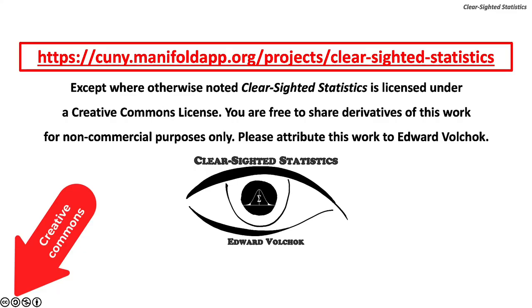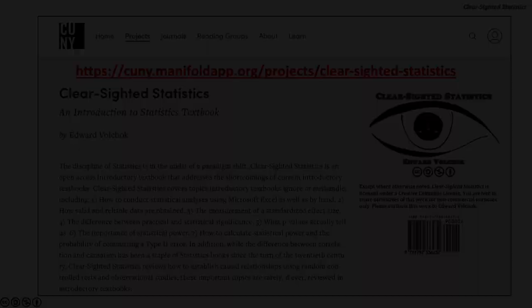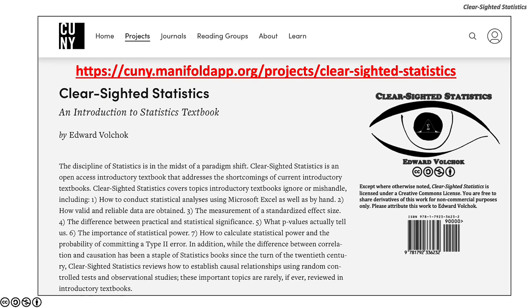Except where otherwise noted, Clearsighted Statistics is licensed under a Creative Commons license. You are free to share derivatives of this work for non-commercial purposes only. Please attribute this work to Edward Volchak. You can access Clearsighted Statistics for free, along with its Excel and PowerPoint files, on the CUNY Commons at https://cuny.manifoldapp.org/projects/clear-sighted-statistics.